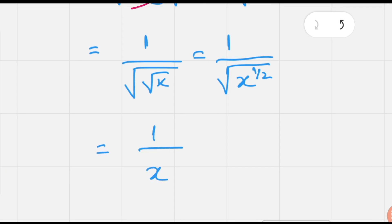So that we have one over x to the exponent one by four or x to the exponent minus one by four. Thanks for watching.